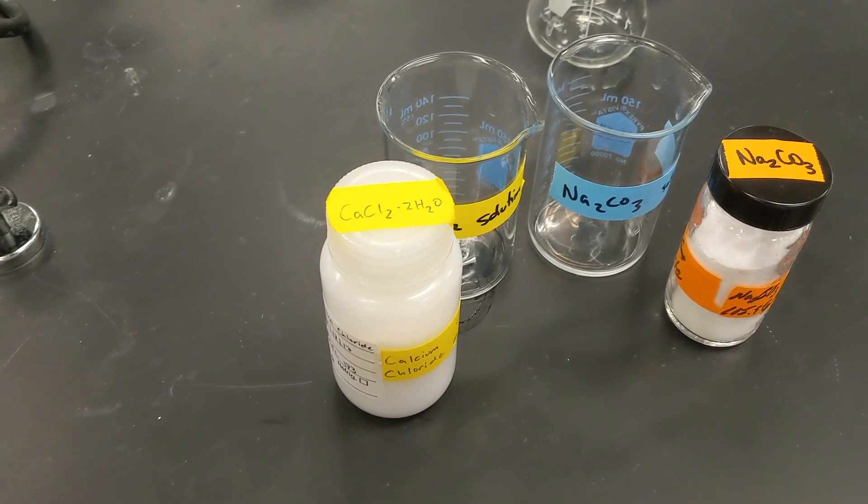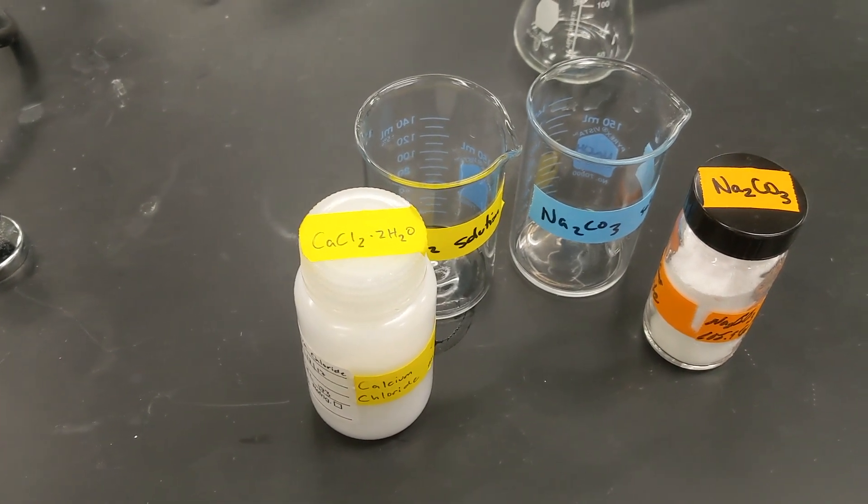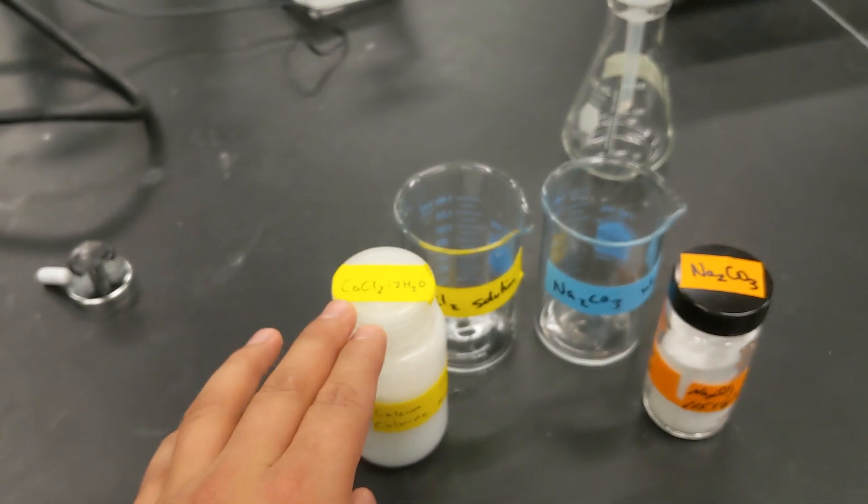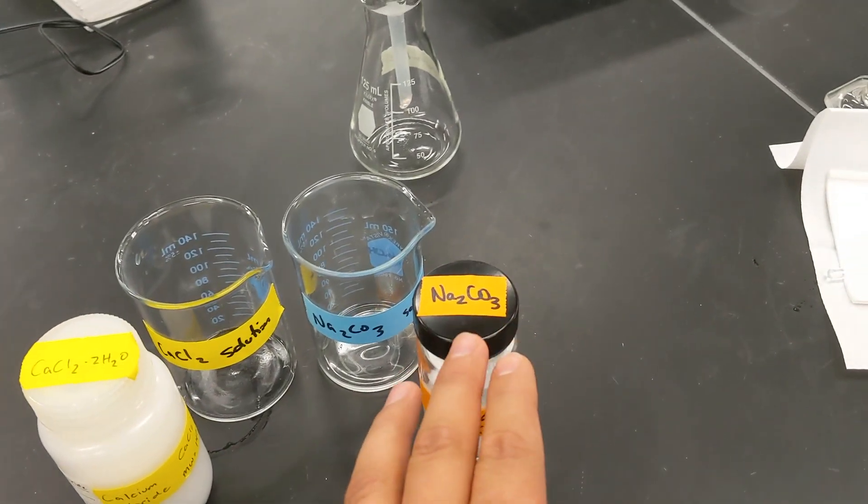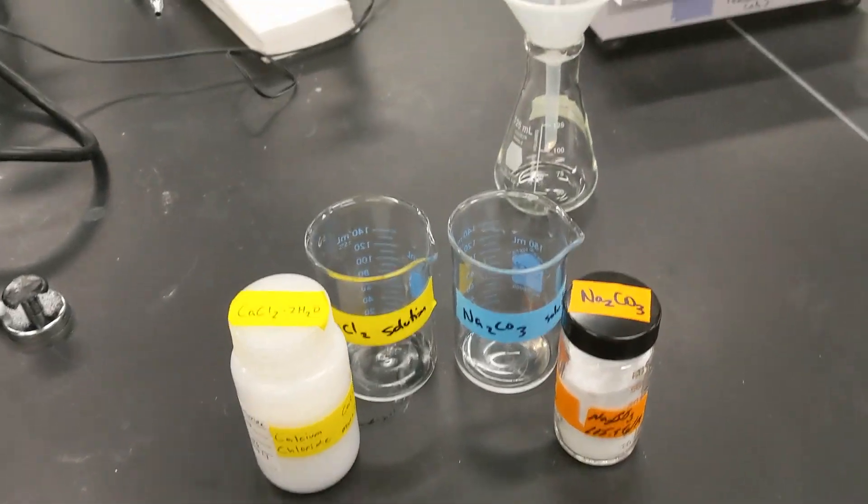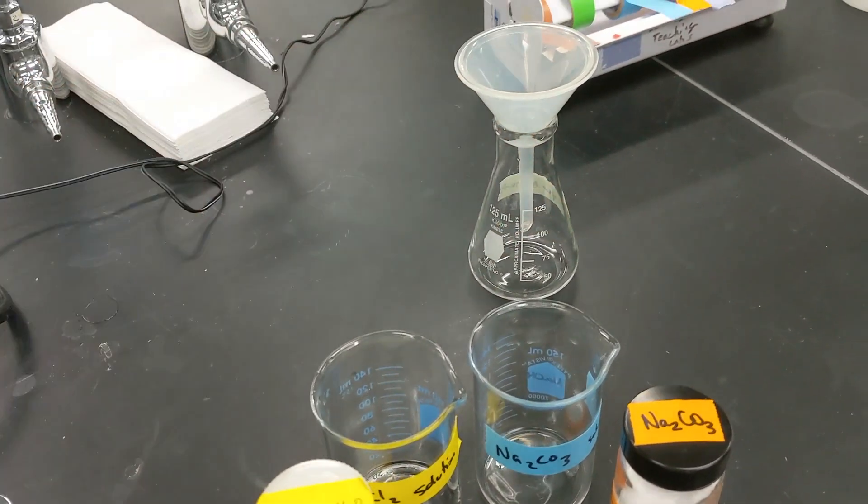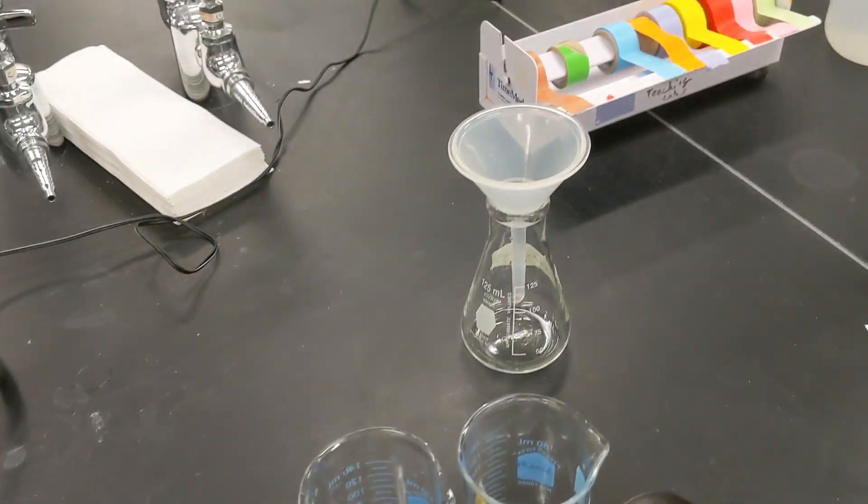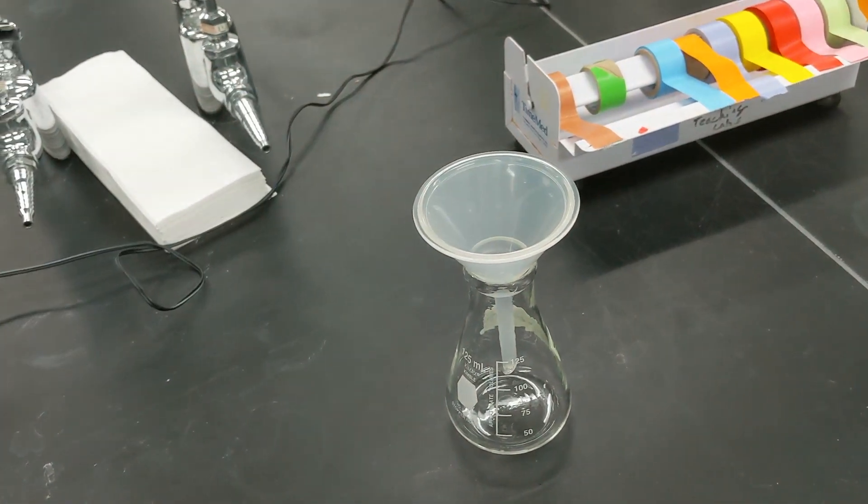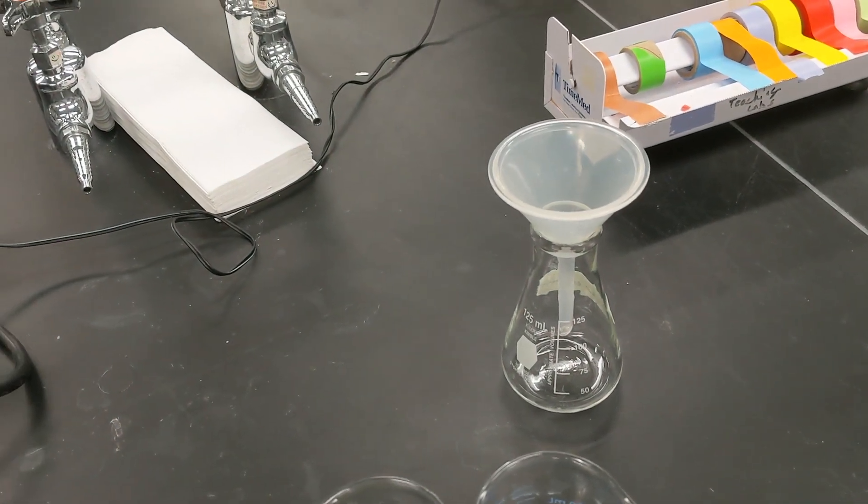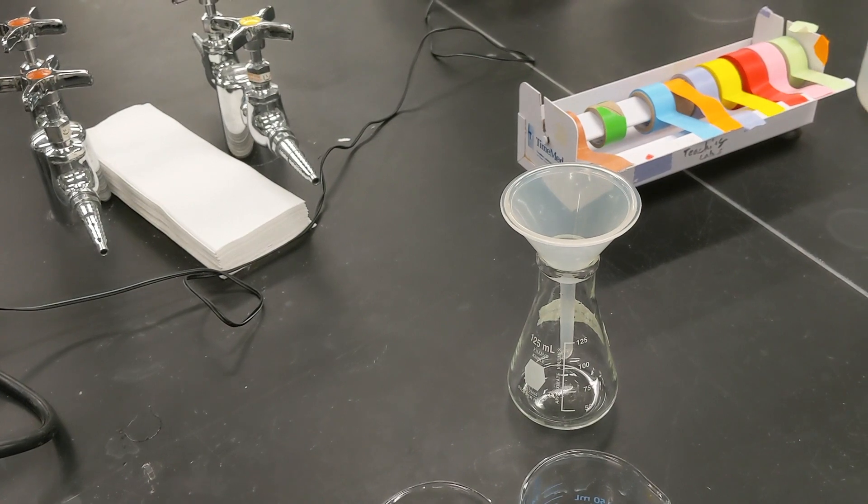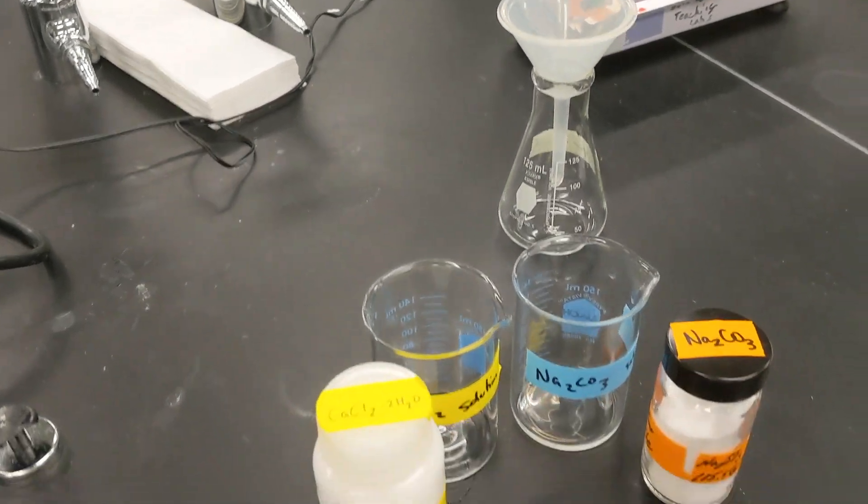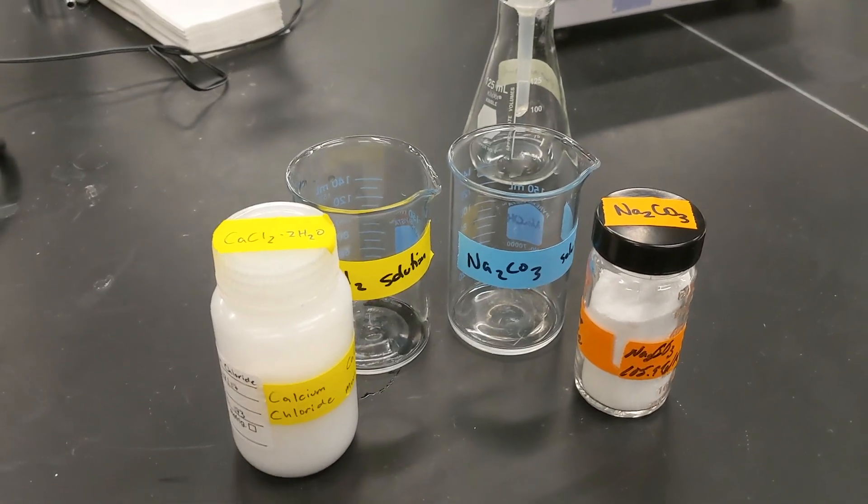So for today's lab we're going to be doing a gravimetric analysis procedure where we will have calcium chloride dihydrate and sodium carbonate, two different solutions in each beaker. We're going to combine them together to form a precipitant which will then be filtered from our filtering apparatus where we can catch the precipitant and dry it and weigh it and do some analysis on that. Let's get started.